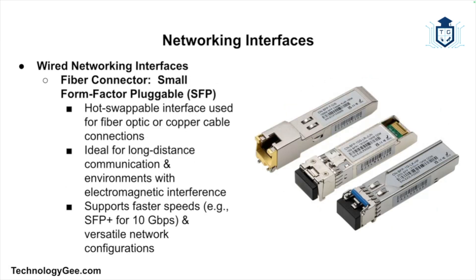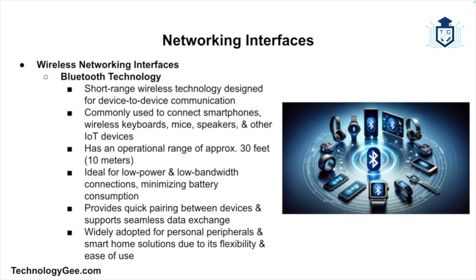Another wired interface is the Small Form-factor Pluggable or SFP connector, commonly found in fiber optic networking. SFPs are hot-swappable interfaces that allow network devices like switches to connect to fiber optic or copper cables, providing faster speeds and greater distances than traditional ethernet. Fiber optic cables use light to transmit data, making them ideal for long-distance communications or environments where electromagnetic interference is an issue. SFP modules come in various types such as SFP+ for 10 gigabit per second connections, offering versatility in network configuration.